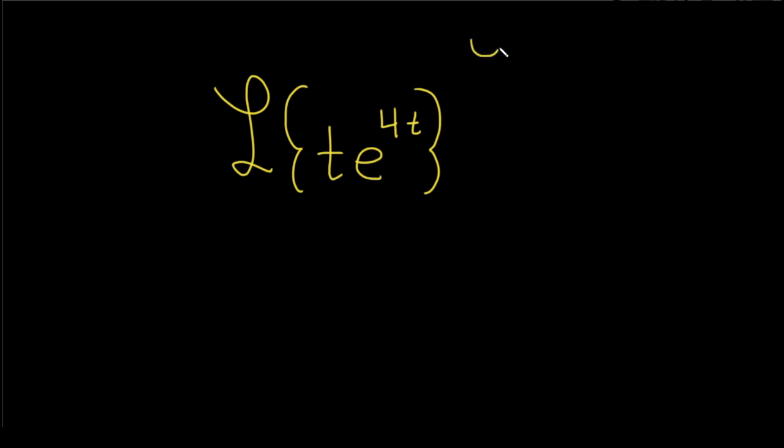That tells us if we have the Laplace transform of, say, f of t times e to the at, what we can do is we can replace the e with the following. So we have the Laplace of f of t, and we can replace it with a shift. The shift takes s to s minus a.